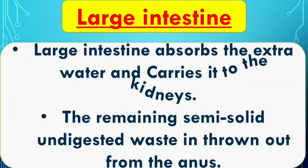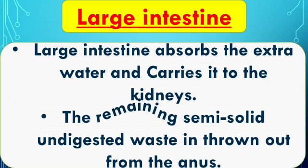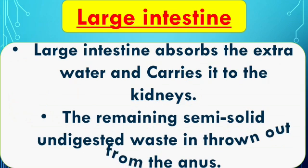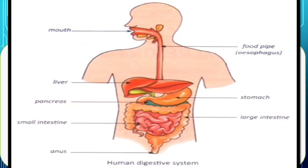The large intestine absorbs the extra water and carries it to the kidneys. The remaining solid undigested waste is thrown out from the anus. See here in the picture — this is the large intestine.